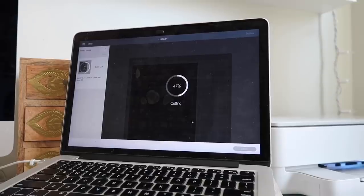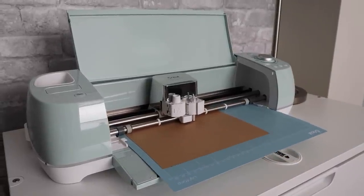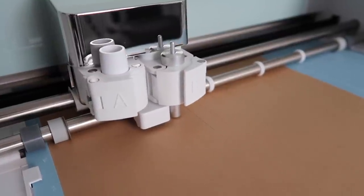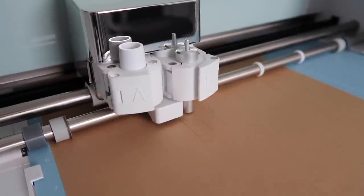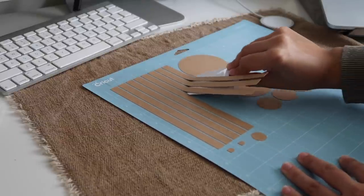After that, I was ready to get cutting and sent the project to my Cricut Explore Air 2. One of the things I really appreciate about the Explore Air 2 is how many types of projects I can create with it. It's able to cut 100 materials, including vinyl, paper, cardstock, felt, leather, and more, and it's also able to draw and score materials.